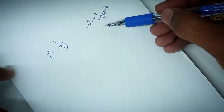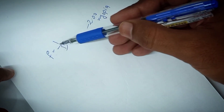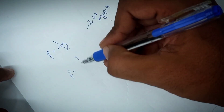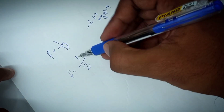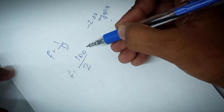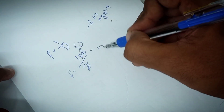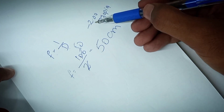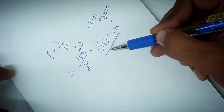If the patient has minus 2 diopters of myopia, using the same formula f = 1/D, we get f = 100/2 = 50 centimeters. So if the patient has myopia of minus 2 diopters, their farpoint would be at 50 centimeters, nearer to the eye.